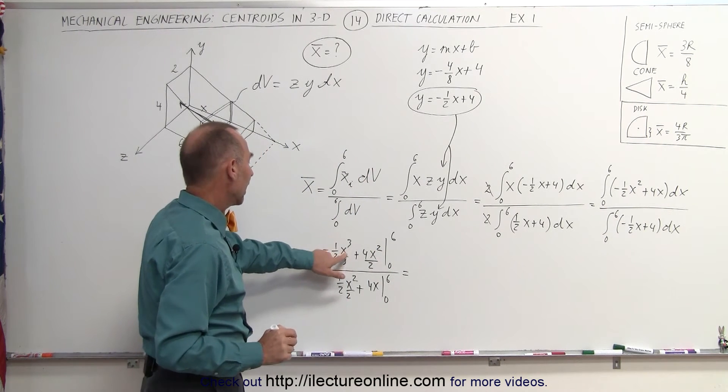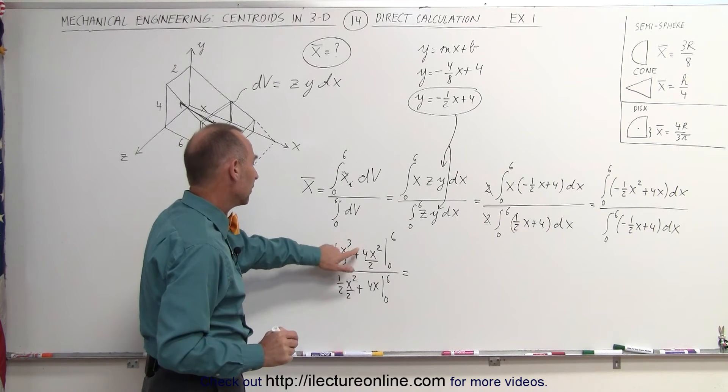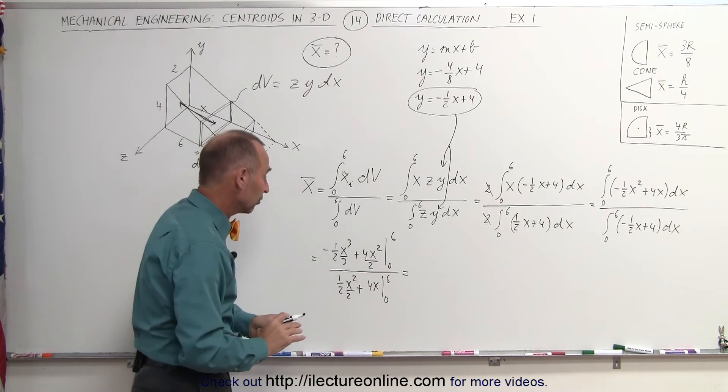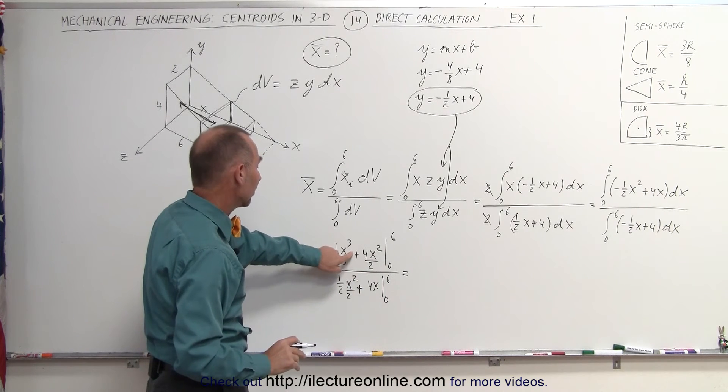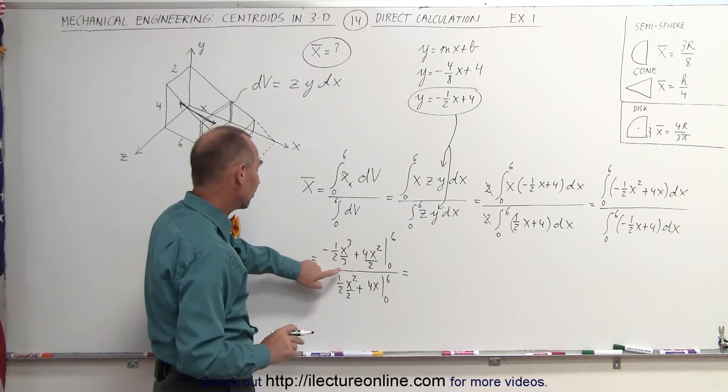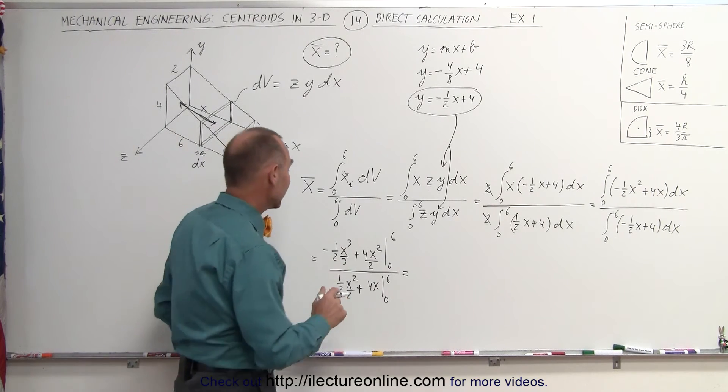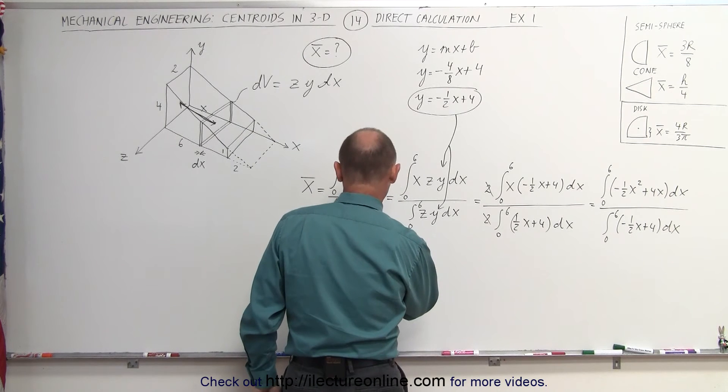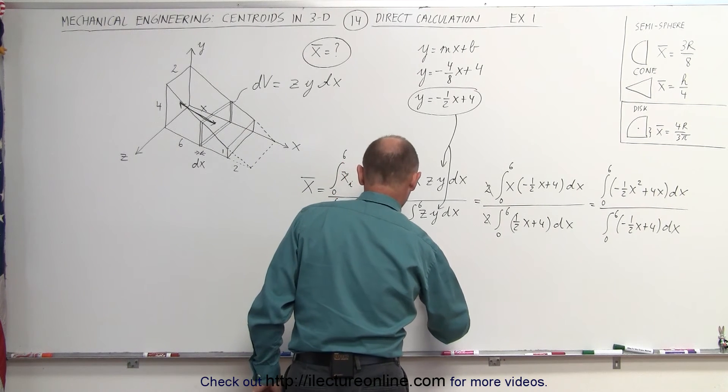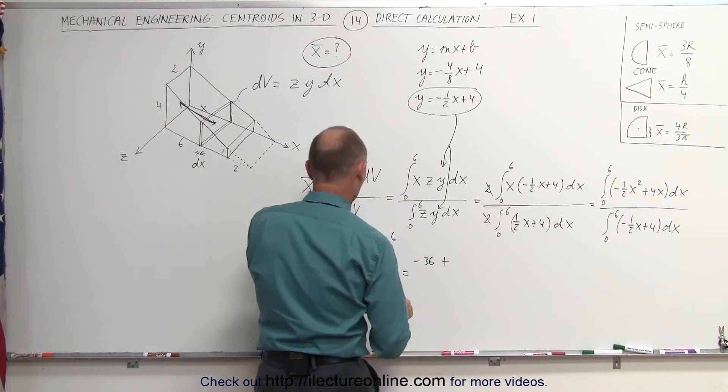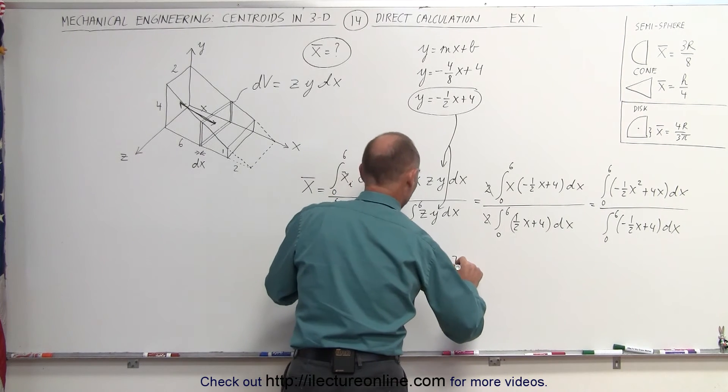The numerator we have x cubed, that means when we plug in the 6, obviously when we plug in 0 in both in the numerator and denominator, we get nothing, so we don't have to do that. Plug in 6, 6 cubed is 216 divided by a negative 6, that would be minus 36, minus 36 plus 36 times 2 would be 72,